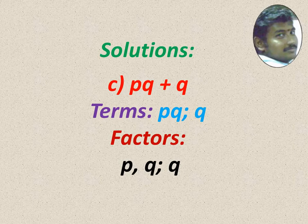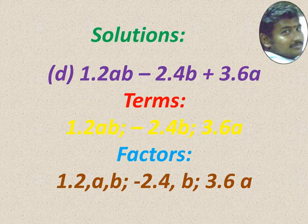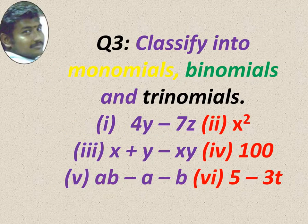For pq plus q: pq is one term and q is another term. Factors of pq are p and q; factor of the second term is just q. For 1.2ab minus 2.4b plus 3.6a: three terms — 1.2ab, minus 2.4b, and 3.6a. First term has factors 1.2, a, and b; second term has minus 2.4 and b; third term has 3.6 and a.